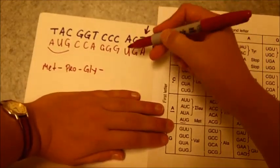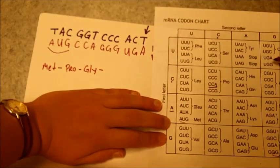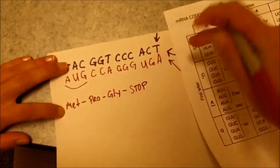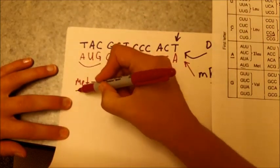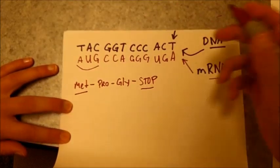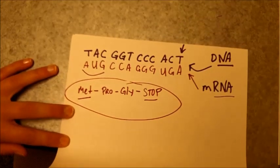And finally, U, G, A. U, G, A. That is our stop codon. So that means our protein is complete. Normally, M, E, T, that's our start codon as well. So we started with the right one and we stopped with the right one. And this is going to be our amino acid sequence, or the sequence of our protein.